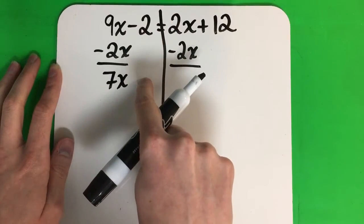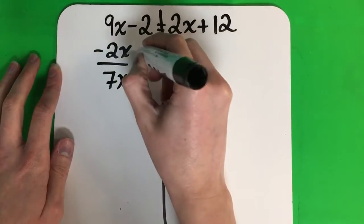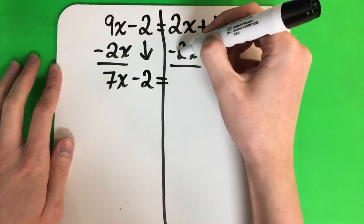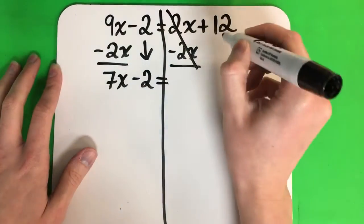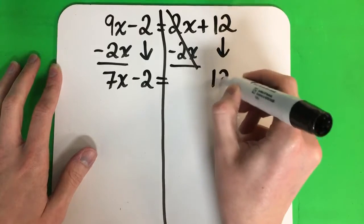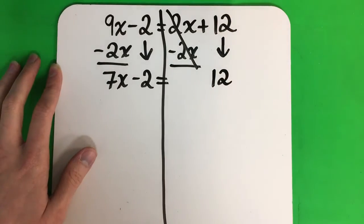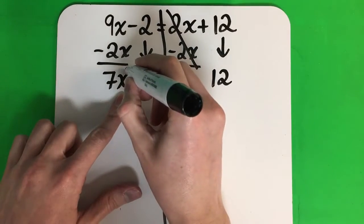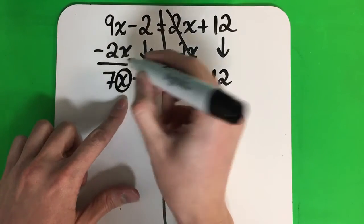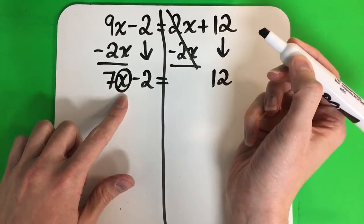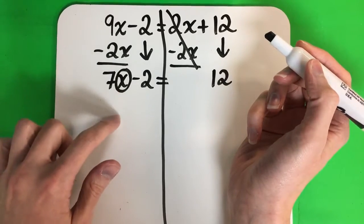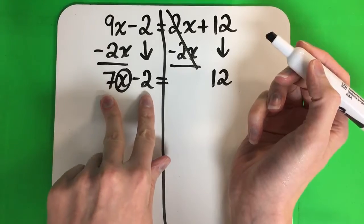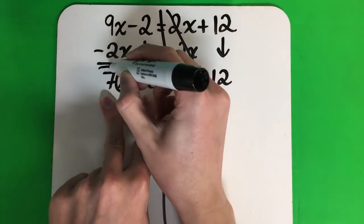Here there's nothing, so we're going to copy that down. Minus 2 equals — 2 minus 2 is 0, that cancels — and we're going to copy down 12. So now my goal is to get the letter alone. I want the variable alone. So I'm going to circle the letter. My letter is on the left side. Two numbers are on the left side: I have a 7...